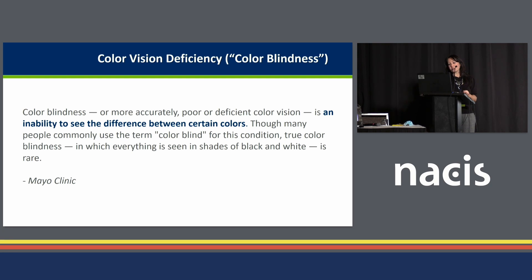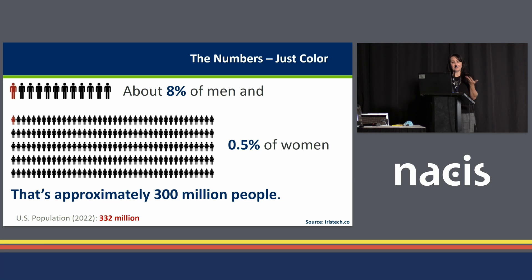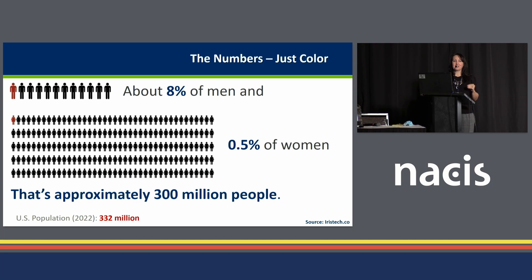Color blindness — more accurately, color vision deficiency — is an inability to see a difference between certain colors, though many people commonly use the term color blind. True color blindness is extremely rare; that's where people see things in black and white. About 98-99% of people with a color vision deficiency are red-green color vision deficient and would see things in more of a mustard yellow color. 8% of men and 0.5% of women worldwide suffer from some form of color vision deficiency — approximately 300 million people, which is almost the population of the United States at 332 million. It's massive.